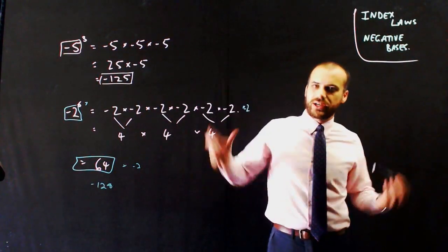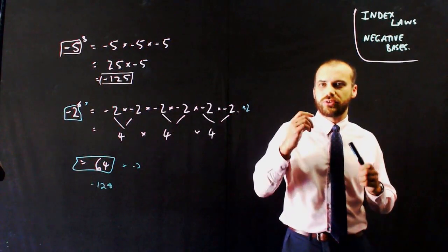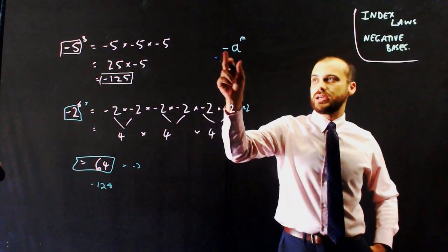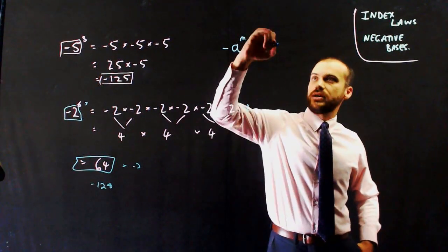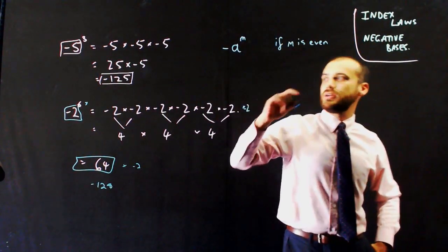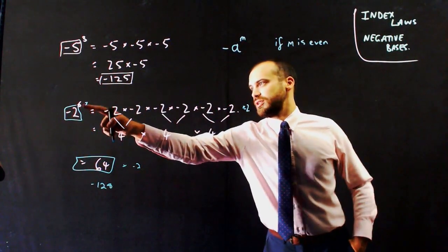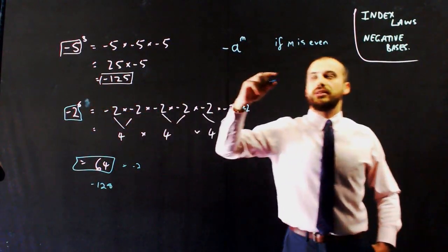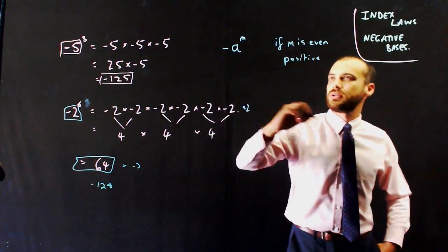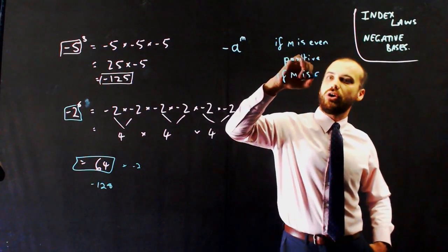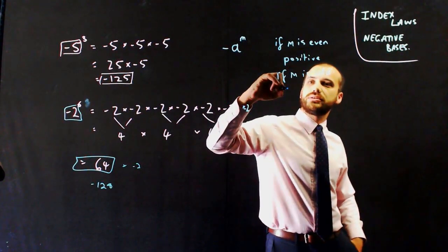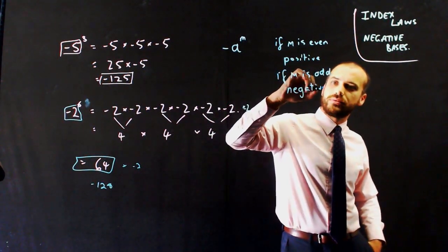There is a simple rule to follow: if we have negative a to the power of m, if m is even — like 6 in this case — then our answer will be positive. If m is odd, if we raise it to an odd power, then our answer will be negative.